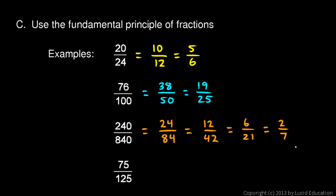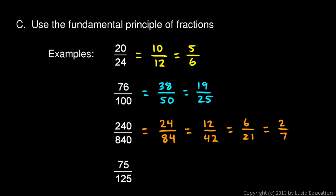With this approach, each step results in a fraction that's a little simpler than the one before it, and each step is pretty easy. You look at your original fraction and whatever comes to mind — if both numbers are even, divide by 2; if they end in zero, divide by 10. You keep finding common factors of the top and bottom, one step at a time, dividing until you get to a number that can't be simplified any further.